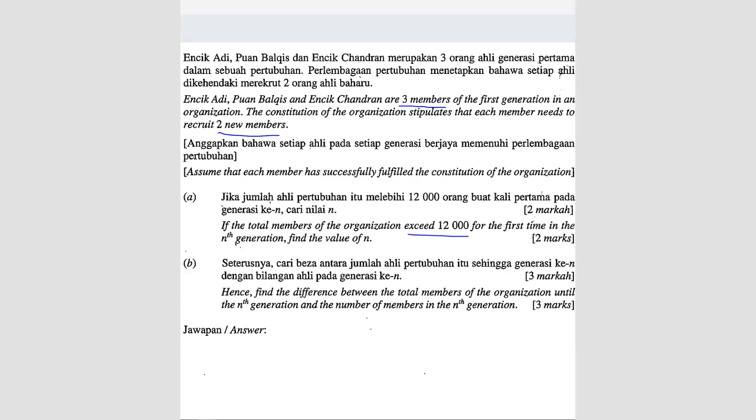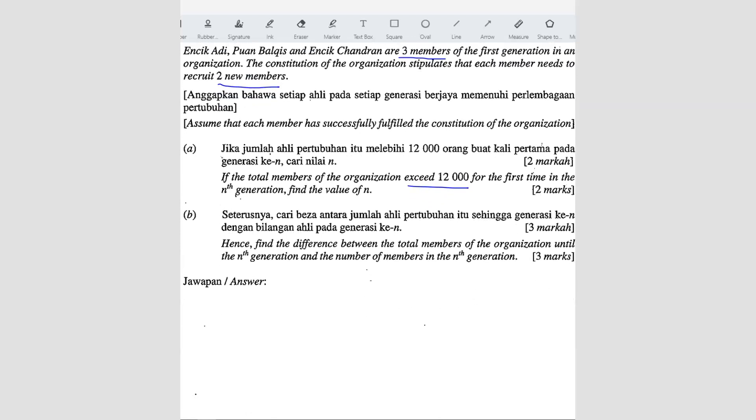So this question, what they're asking is, it's basically a sequence question. We know that the first term is three because there are three members and then each of them have to recruit two. So that means you're going to increase by times two because each of them going to get two members. So you're going to be six and then followed by 12 and so on.